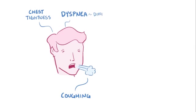That said, symptoms of asthma include coughing, a feeling of chest tightness, dyspnea or difficulty breathing, and wheezing or a high-pitched whistling sound that usually happens during exhalation.